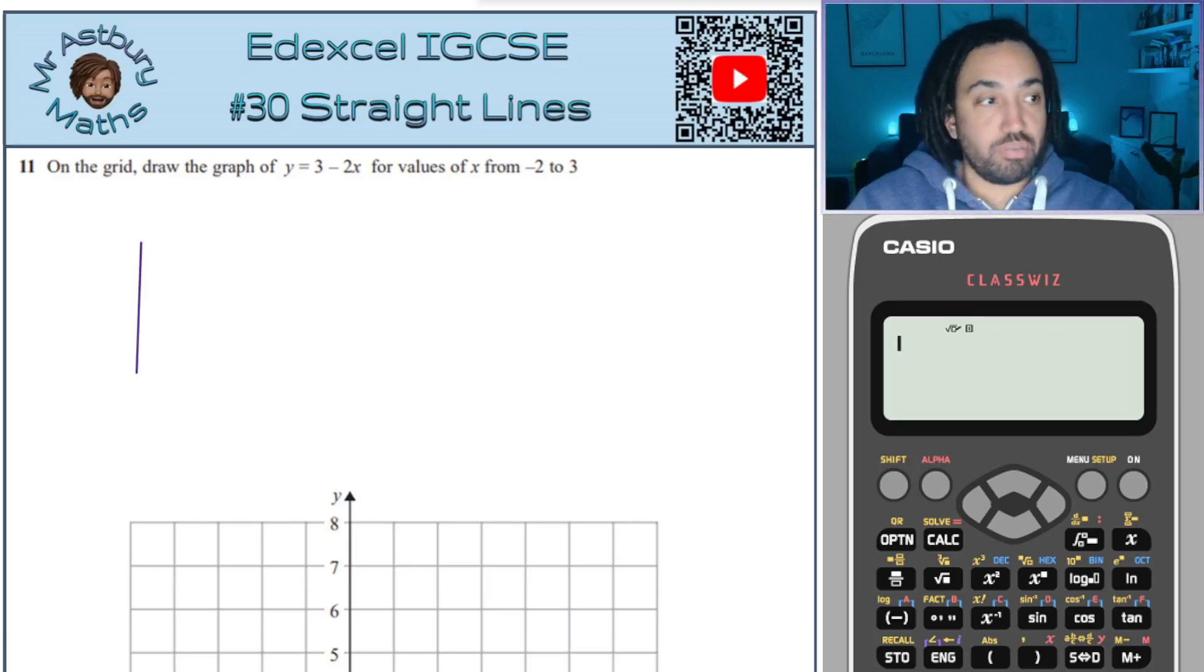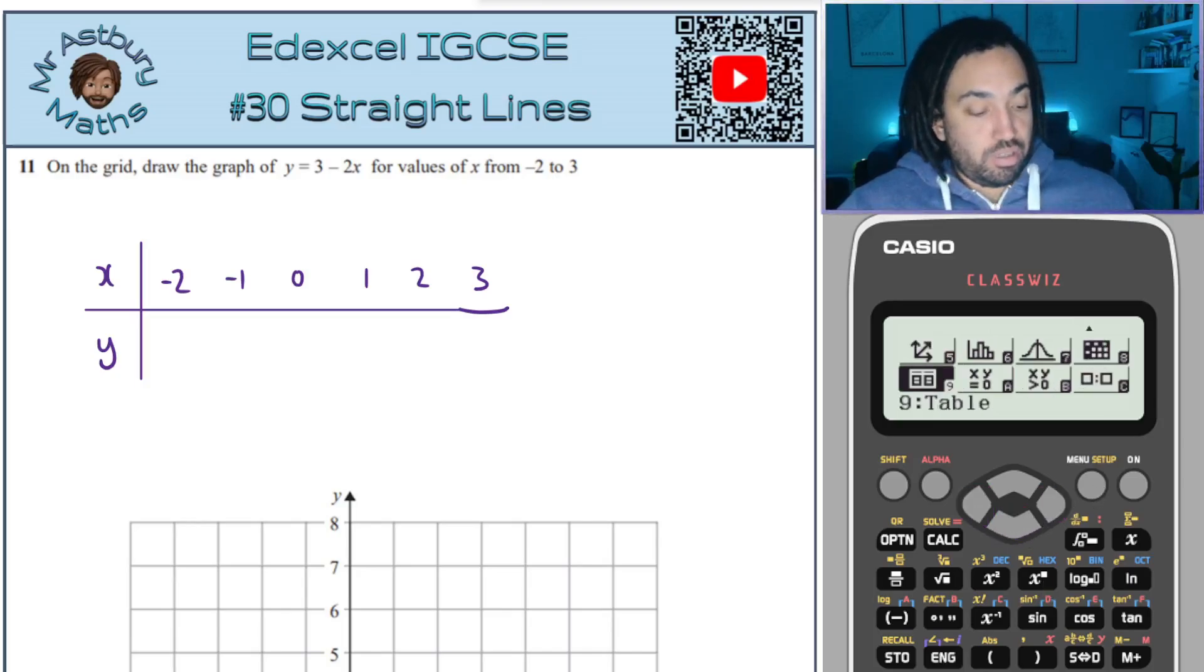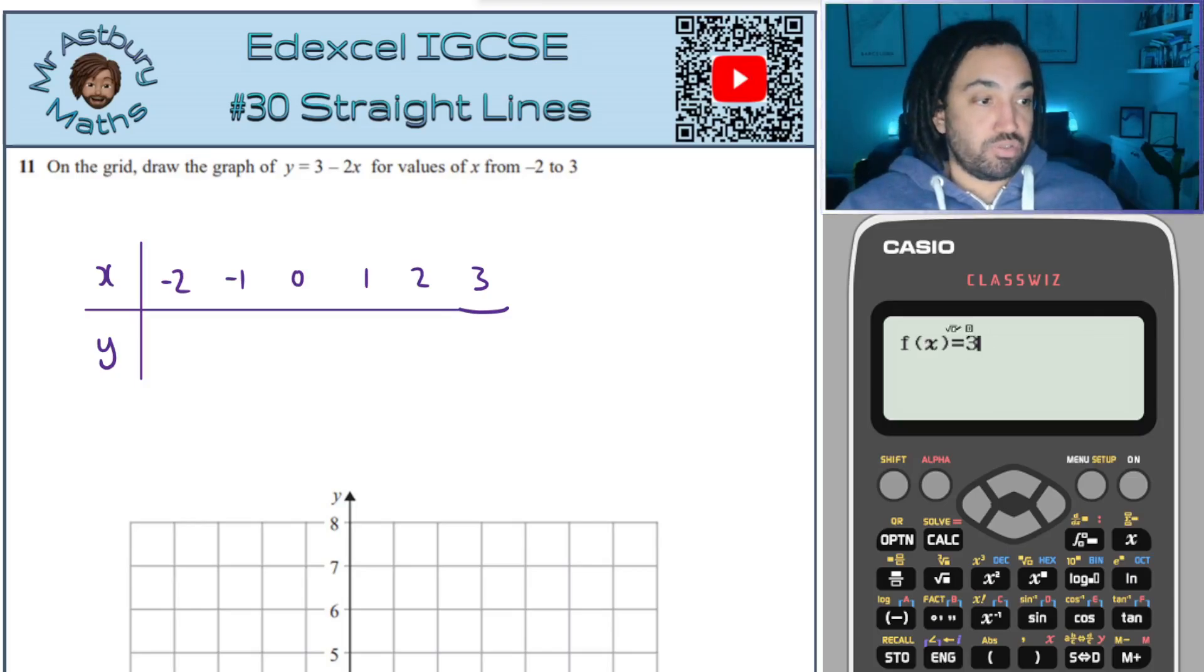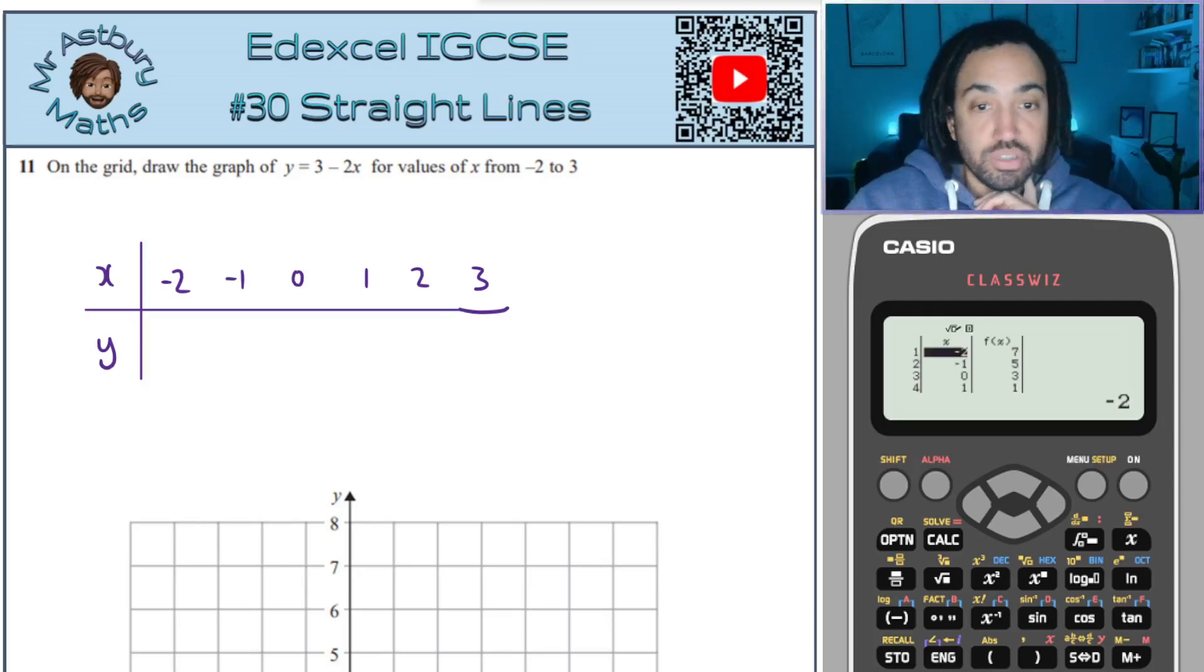Draw the graph, and they've given you a bit of space here to draw a little table, which is always a good idea. So you can type in the numbers here from minus 2 to 3. This would be your x, this would be your y, and you can actually use your calculator to help you with this. So if you go into menu and go down to table and press equals, you can then type in the function, which is 3 minus 2x. You don't need a second function, and you want to go from minus 2 up to 3, and you want to go that in steps of 1. Press equals, and there you have your y values. So you have 7, 5, 3, and 1. And you can scroll down for the other ones as well. And they will be minus 1 and minus 3.